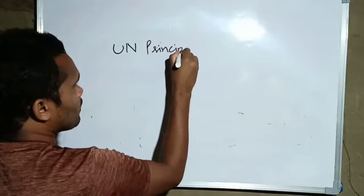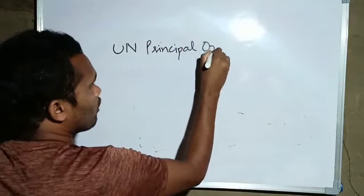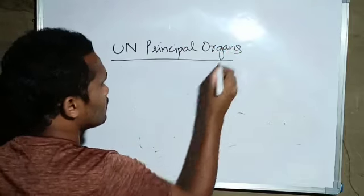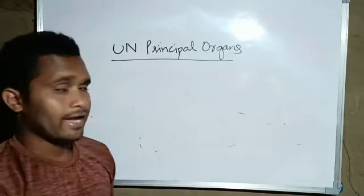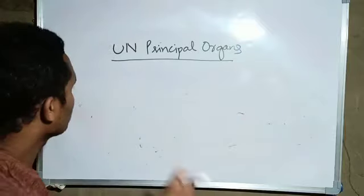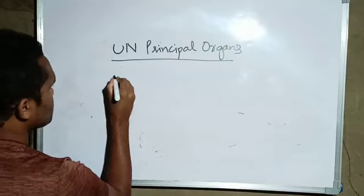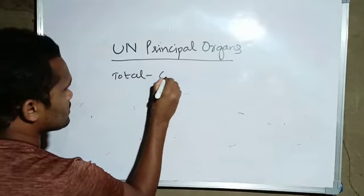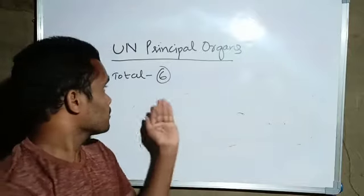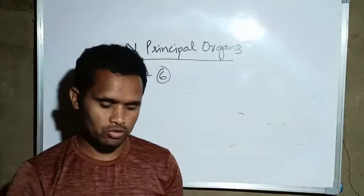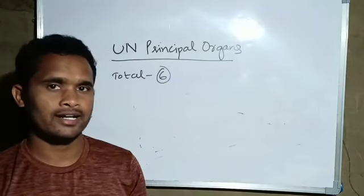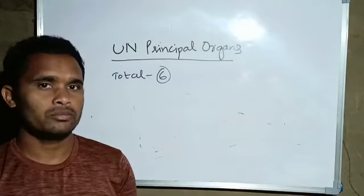Principal organs in the UN, total 6. First is Secretariat.